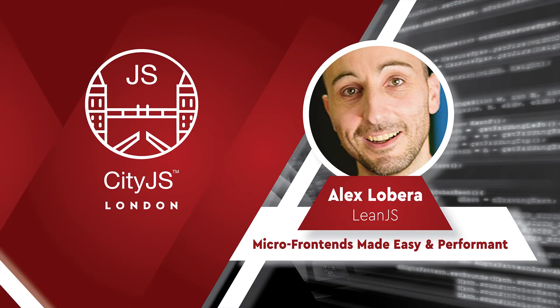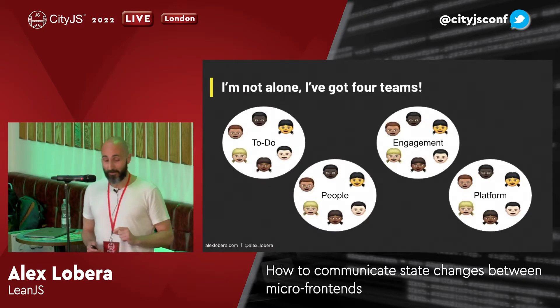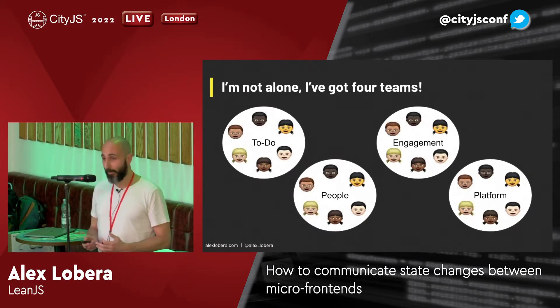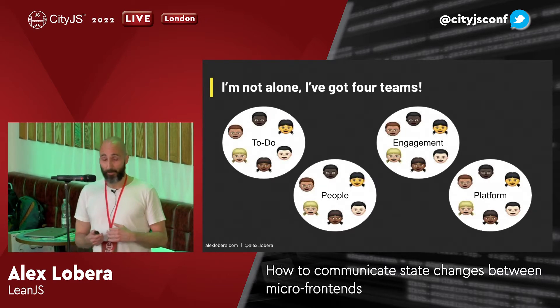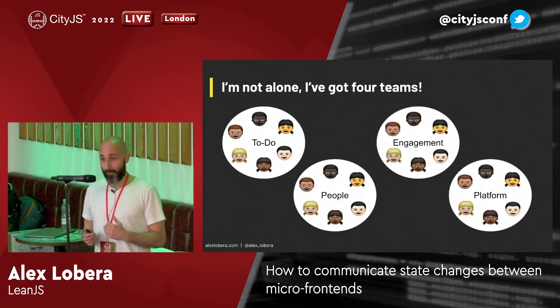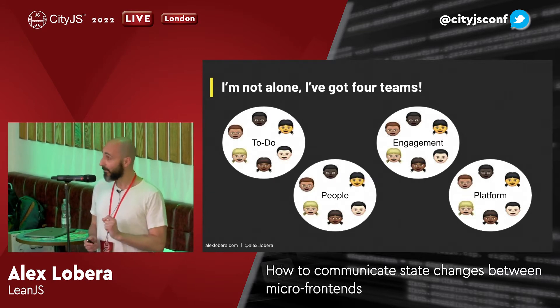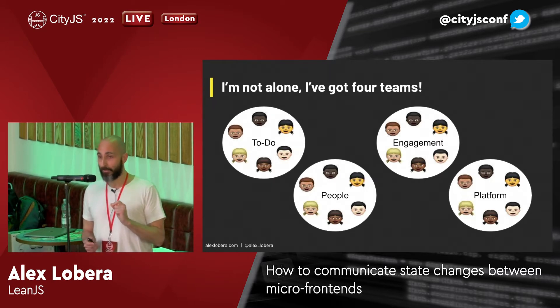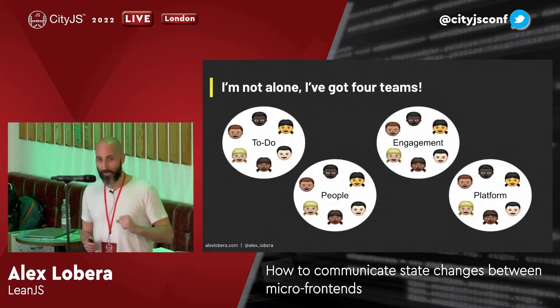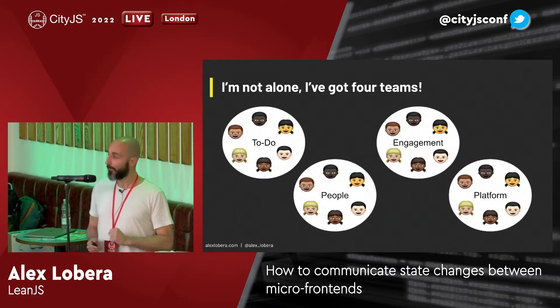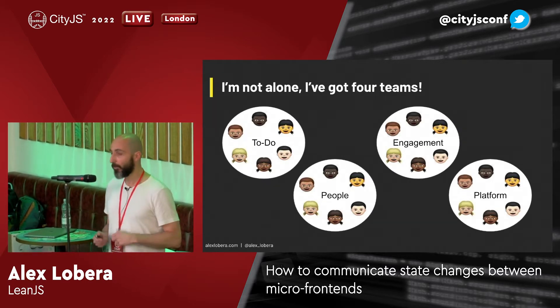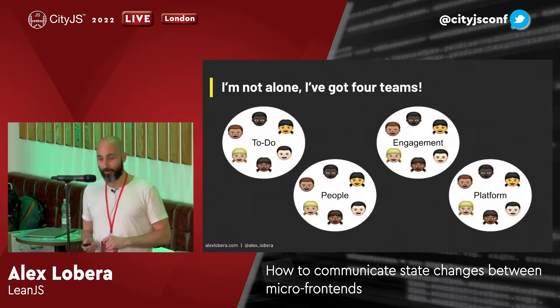I'm not alone — I've got a team, actually four. One of the teams is going to be focusing on the to-dos itself. There will be the people team, focusing on people who want things to get done. The engagement team is really important because that's going to help drive behavior and motivate people to actually get things done. And the platform team will be working on cross-cutting concerns.